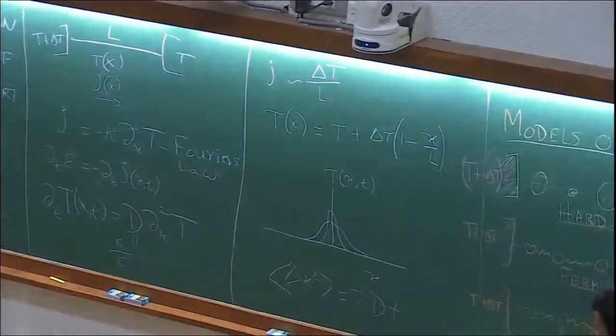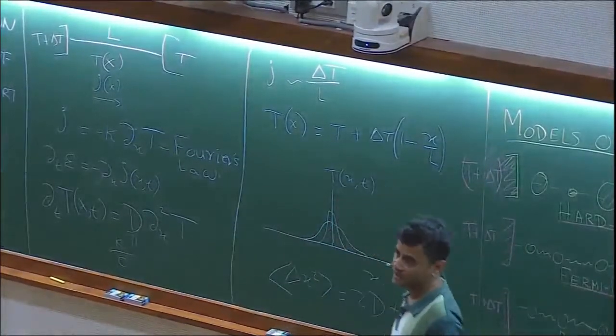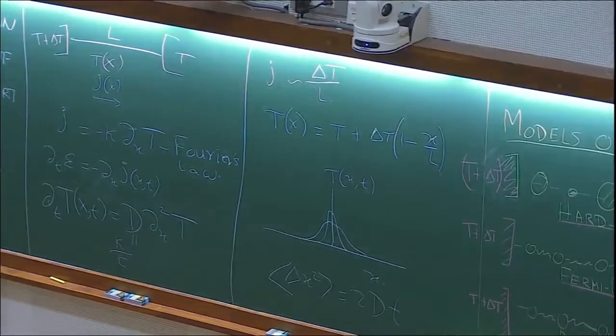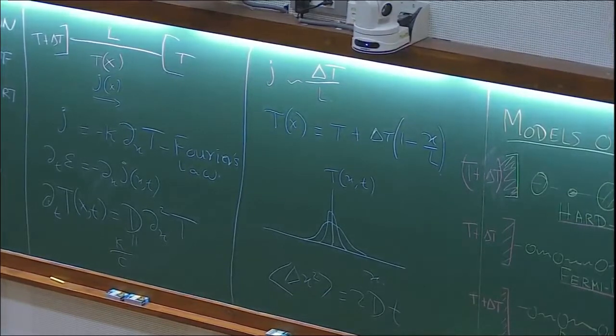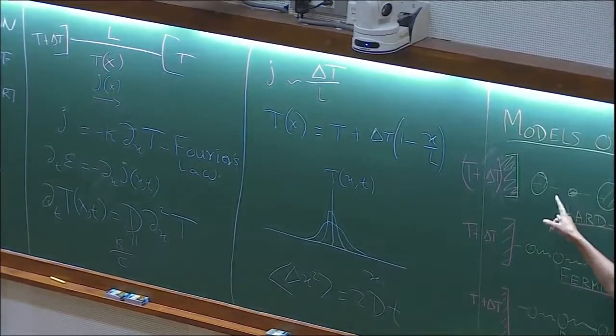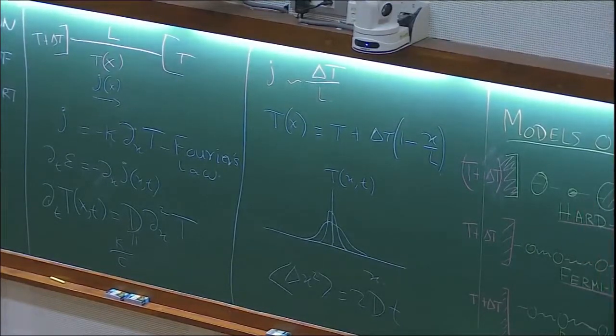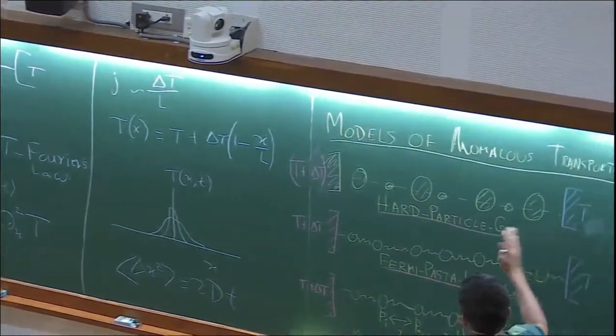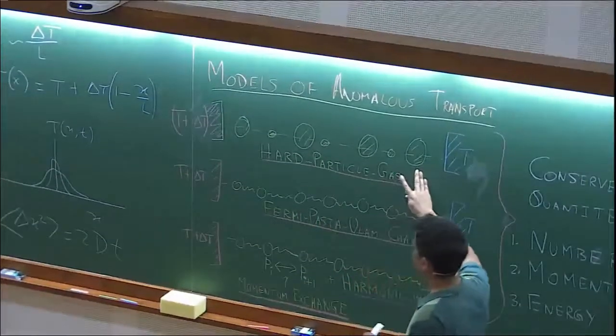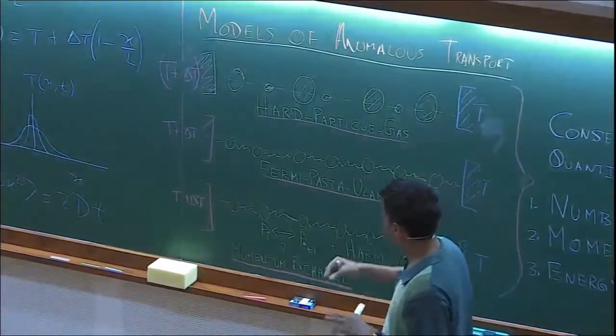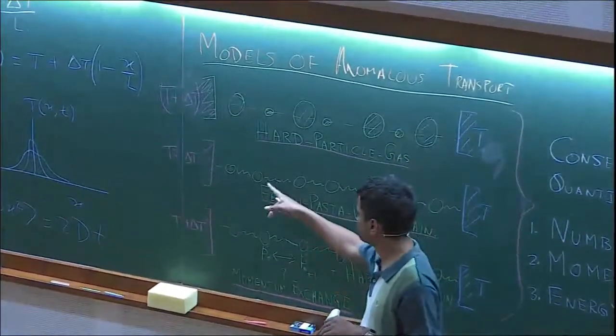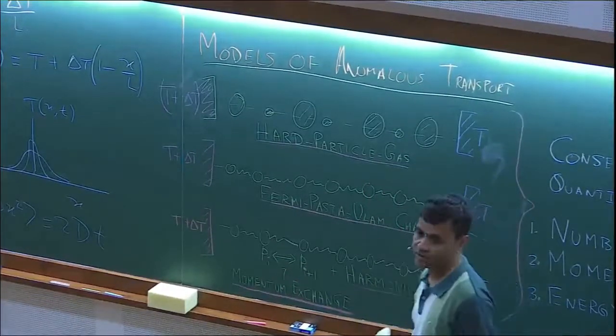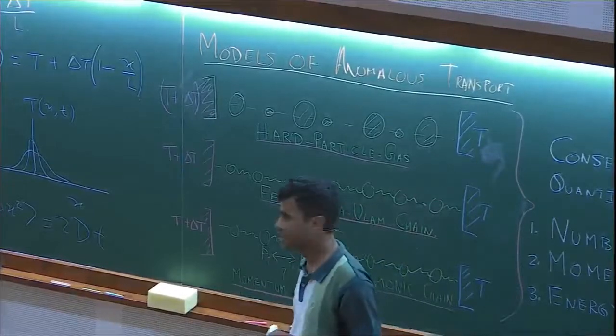So what is anomalous transport? This is a phenomenological law, and you can test it in a microscopic model. Some of the models where you can try to test Fourier's law are one-dimensional systems. You can take a gas of particles with alternate masses, so alternate particles have different masses, and they just collide elastically. A simple model with Hamiltonian dynamics, at the ends you connect to heat reservoirs. This is one model called a hard particle gas model. Another model is called a Fermi-Pasta-Ulam chain, where you have particles connected by anharmonic oscillators, and they follow Newton's equations.